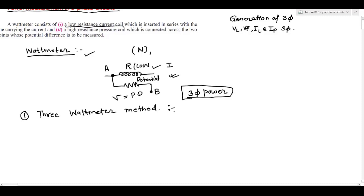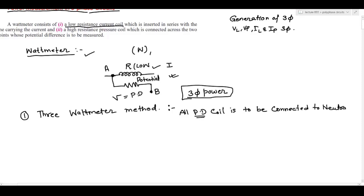We require three wattmeters for measuring the power. The problem with the three wattmeter method is that all the potential coils need to be connected to neutral. We have to connect them to neutral, so we need to identify the neutral point.